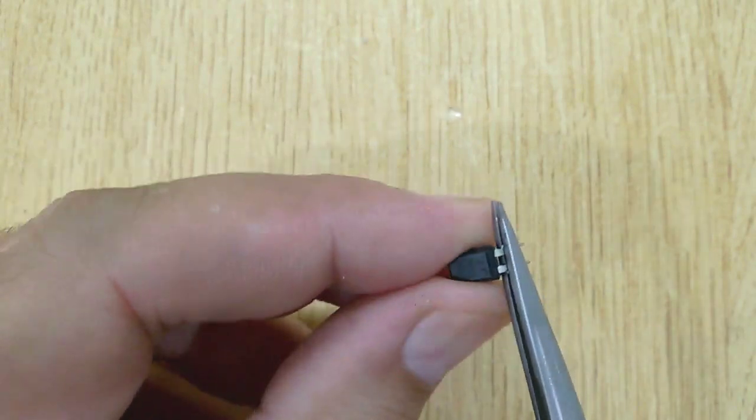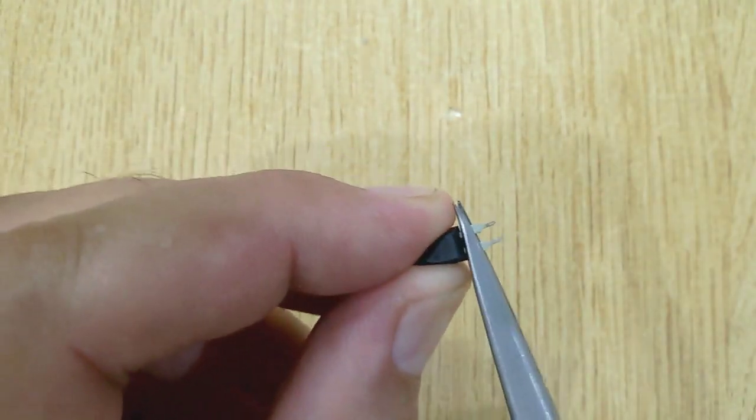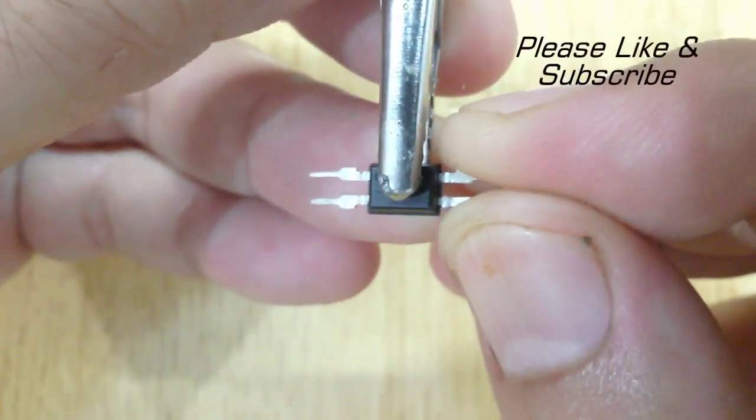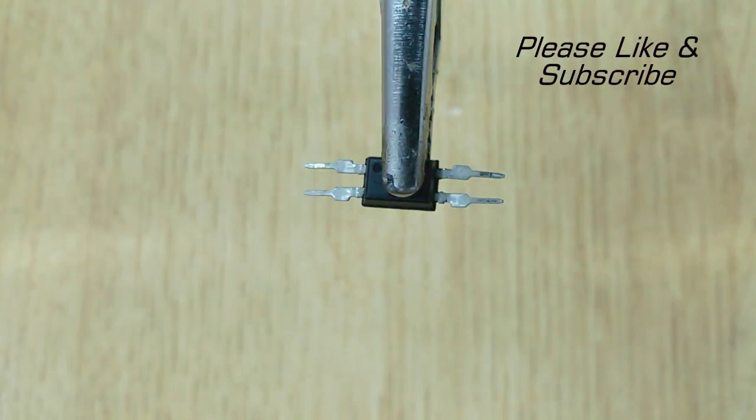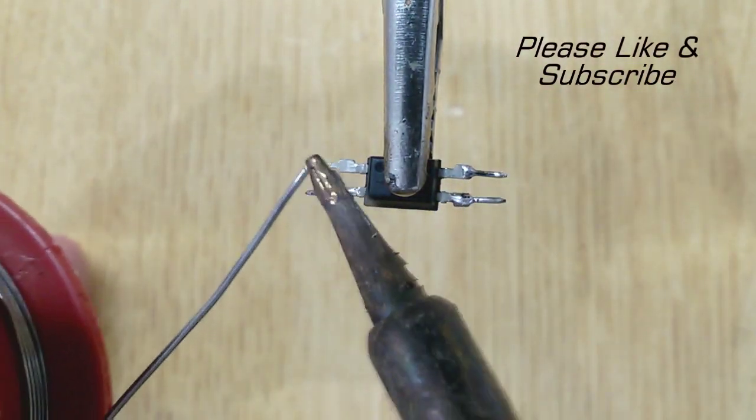Now start making the circuit. First apply some solder on all four pins of PC817.